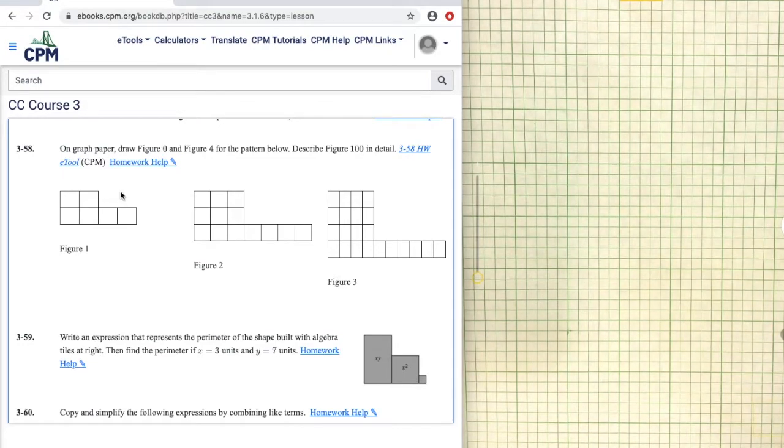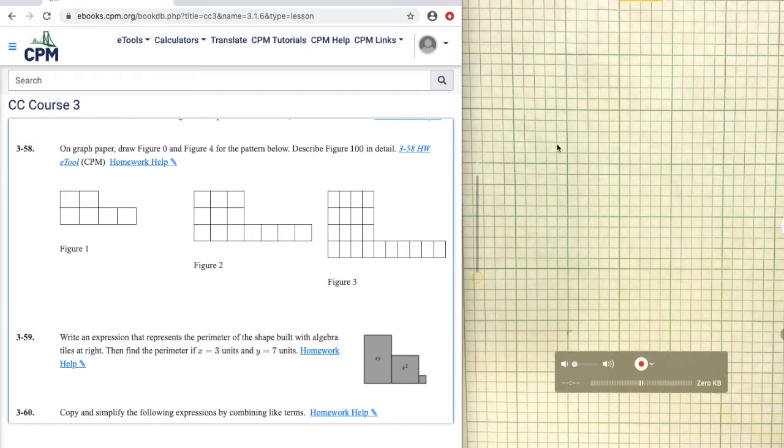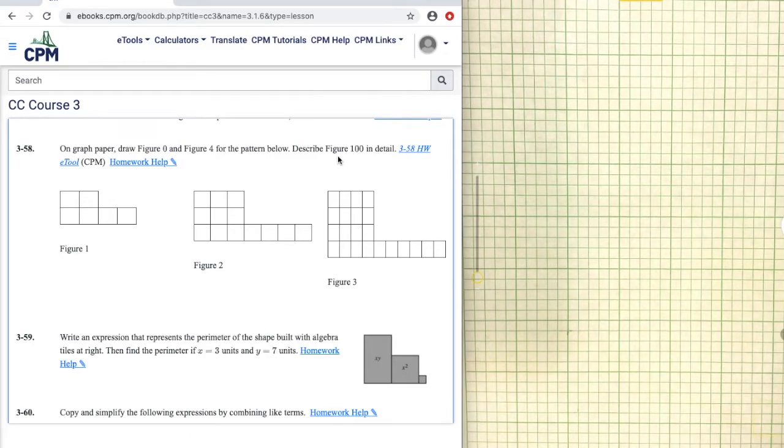Problem 3-58. We're given these three figures and we want to try finding figure 0 and figure 4, drawing them on this graph paper. And then we want to describe what figure 100 would look like. It would probably be a little bit too big to draw.